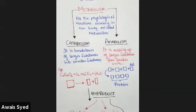On the other hand, you have an example of anabolism. Anabolism is the making up of larger substances from smaller units. For example, what is a protein made from? It is made from amino acids, which are the smaller units. So you link up different units of amino acids together to form the structure of a protein.